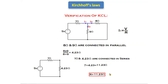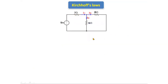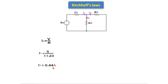The total resistance R is 11.23 ohms. Substituting into the formula I1 = V / R, with total voltage 5 volts and total resistance 11.23 ohms, we get I1 = 5 / 11.23 = 0.44 amperes. This is the total current value.